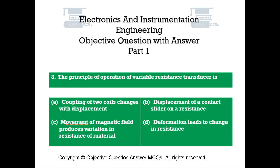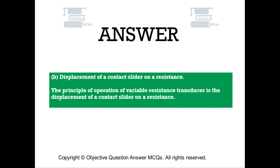Question number 8. The principle of operation of a variable resistance transducer is: Option A: Coupling of two coils changes with displacement. Option B: Displacement of a contact slider on a resistance. Option C: Movement of magnetic field produces variation in resistance of material. Option D: Deformation leads to change in resistance. The right answer is Option B — Displacement of a contact slider on a resistance.